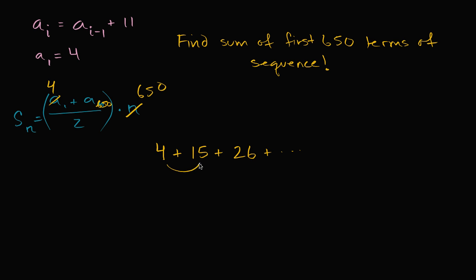Now how many times are we going to add 11? Well, to get to the second term, we add 11 once. To get to the third term, we add 11 twice. So to get to the 650th term, we're going to have to add 11 650 minus one times, or 649 times.